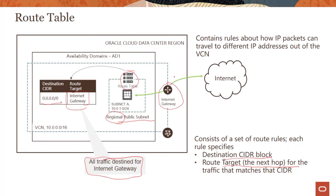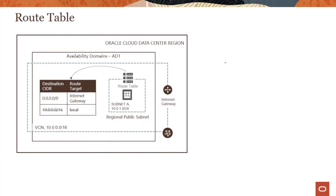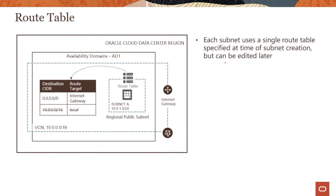What I do is create an internet gateway — it's a managed service provided by the OCI Virtual Cloud Network service. Because of that entry in the route table, my packets can actually go to the internet and also come from the internet. So if it's a web server, users could access my web server running in the public subnet.